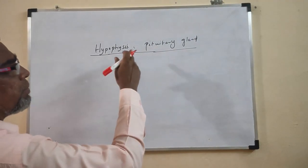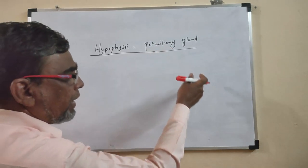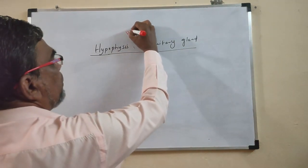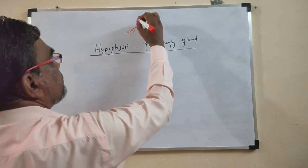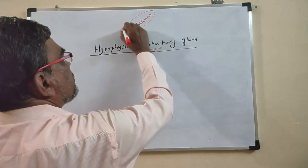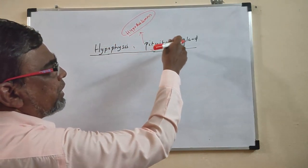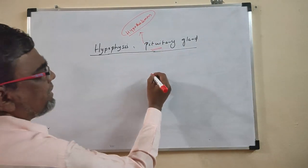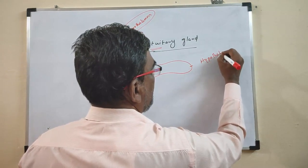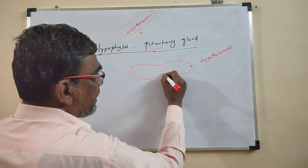The hypophysis or pituitary gland is called the master of all glands because it regulates other glands. However, this pituitary is itself controlled by a structure called the hypothalamus. The hypothalamus is a part of the diencephalon, which is part of the brain. So the hypothalamus controls the pituitary, and the pituitary controls the other glands.